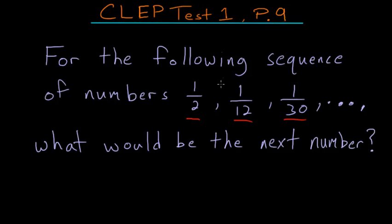And the second thing I'll try is whether or not we're multiplying or dividing the same thing from term to term. So notice that going from term 1 to term 2, we're dividing by 6, but if we divide by 6 again going from term 2 to term 3, we would get 1 72nd instead of 1 30th. So we can eliminate that option as well.